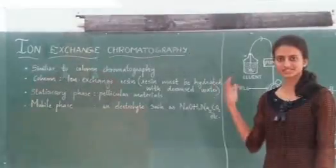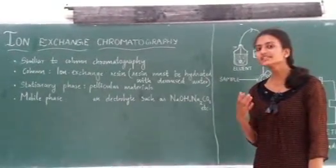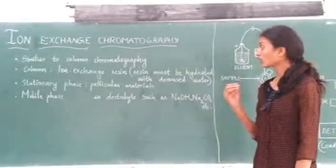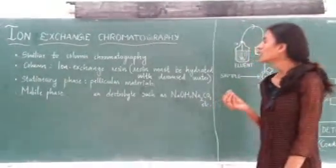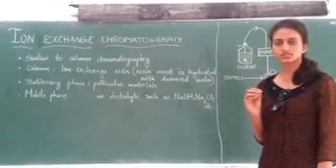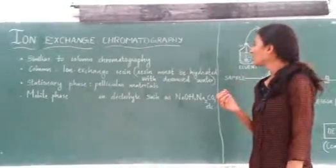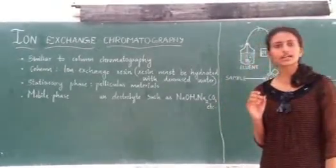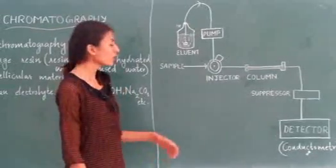Here we are going to discuss the principles of ion exchange chromatography. First of all, it is similar to column chromatography except that here the column contains ion exchange resins instead of adsorbent materials. Next, the stationary phase is particular resins, which means polystyrenes. The mobile phase is electrolytes such as aqueous solutions of acids or bases.